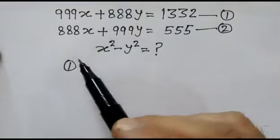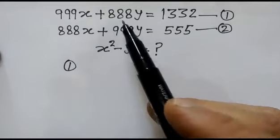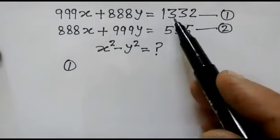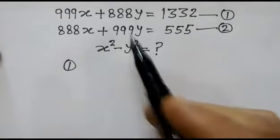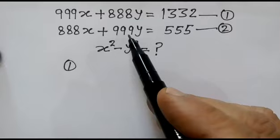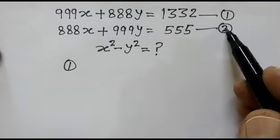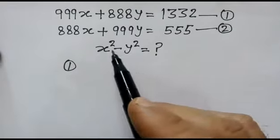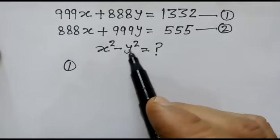Hi friends, we have given two equations: 999x plus 888y equals 1332, equation number first, and 888x plus 999y equals 555, equation number second. We have to find out the value of x squared minus y squared.